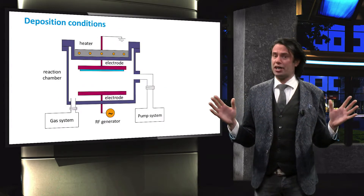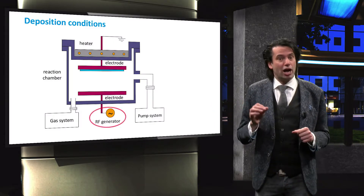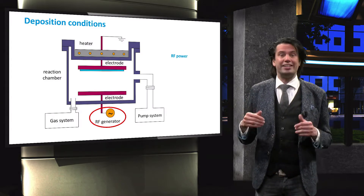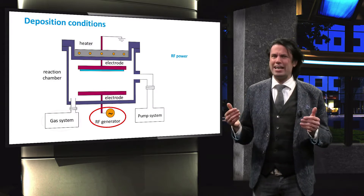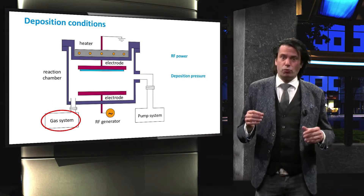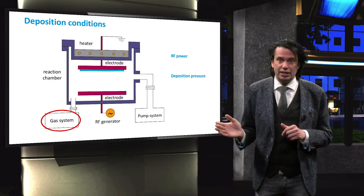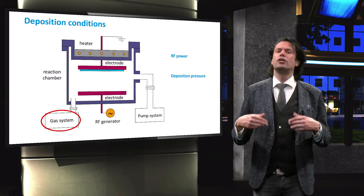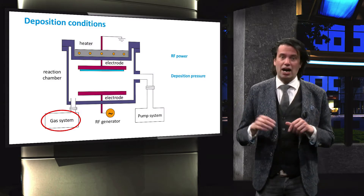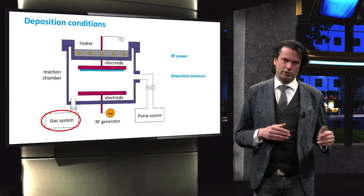One way of tuning the ion energy is to decrease the potential difference across the plasma sheath by adjusting the RF power. Another approach to decrease the energy of ion bombardment is by increasing the pressure during deposition. Increasing the pressure, which basically means pumping more gas particles into the same volume, leads to an increased number of ion-neutral collisions. During each collision, the ion loses some of its energy and momentum, thereby decreasing its velocity.